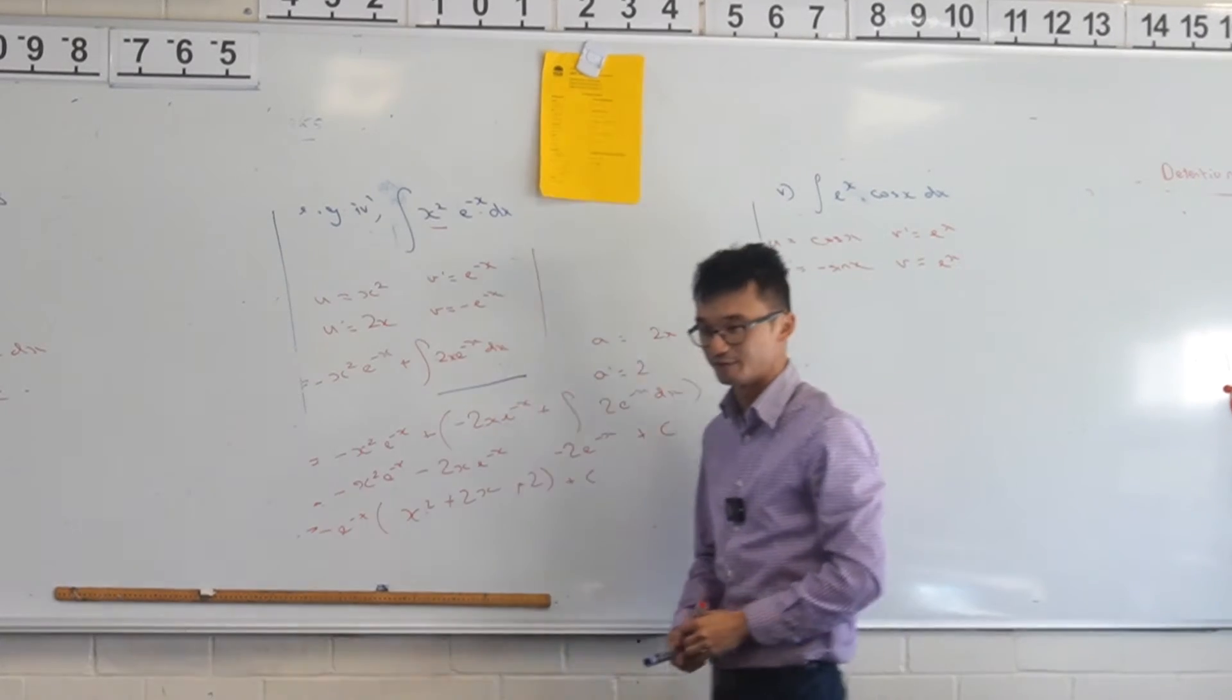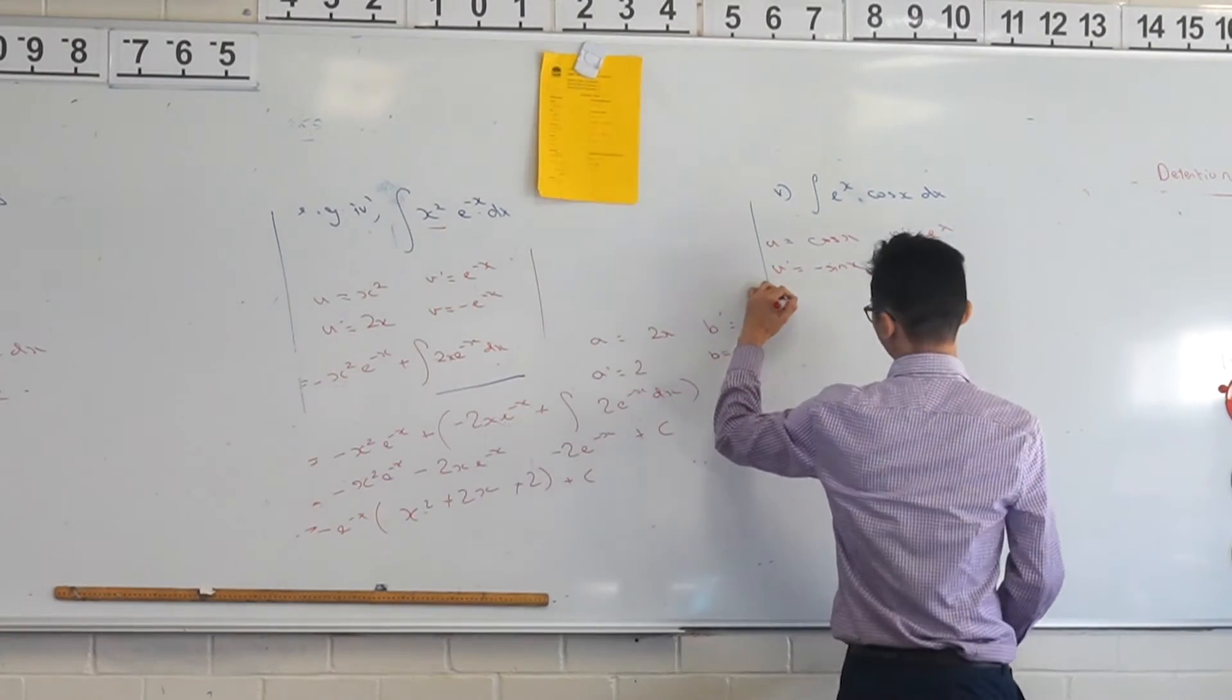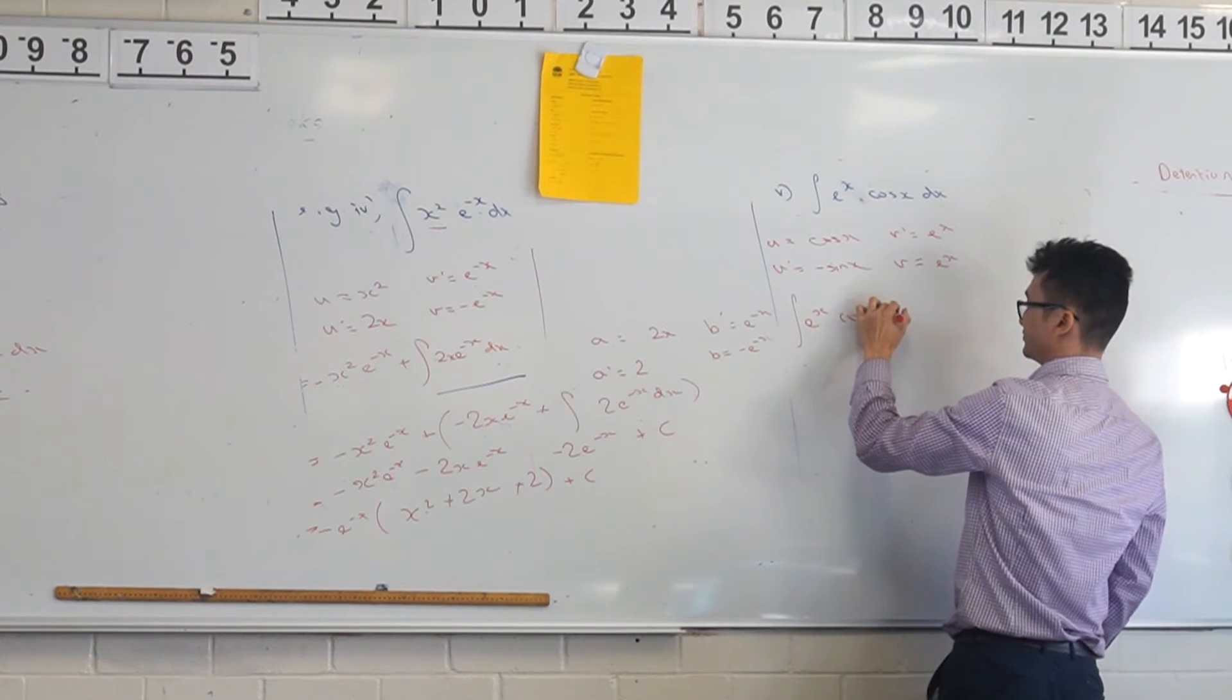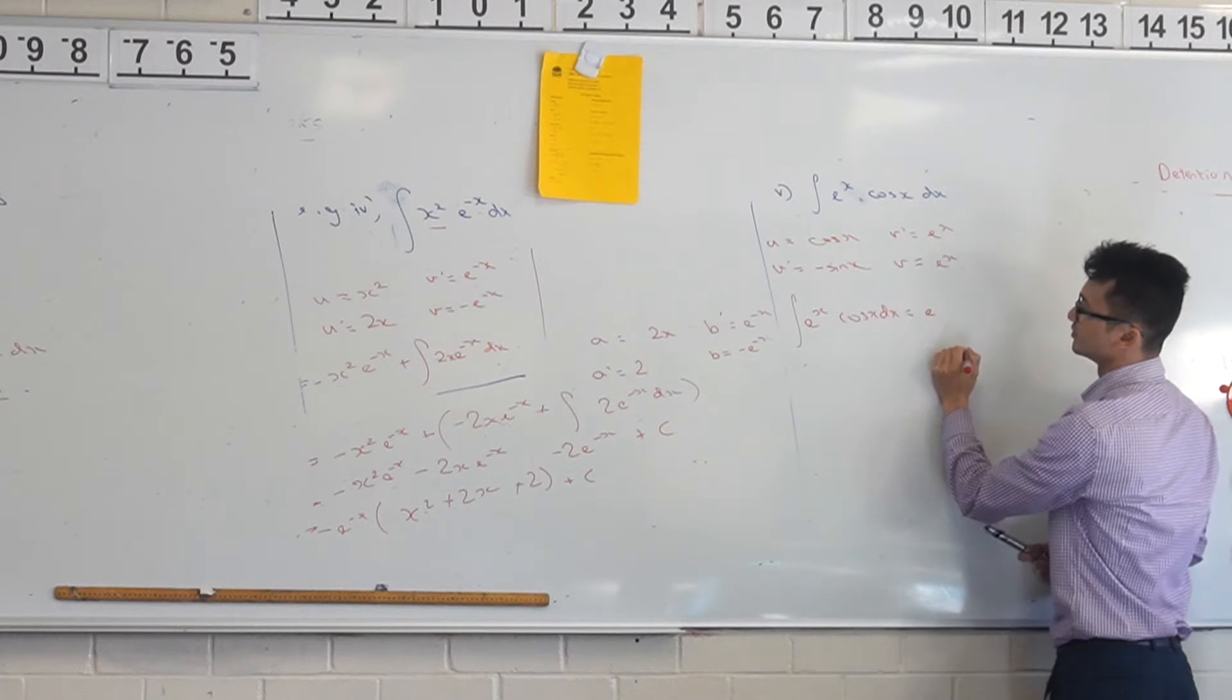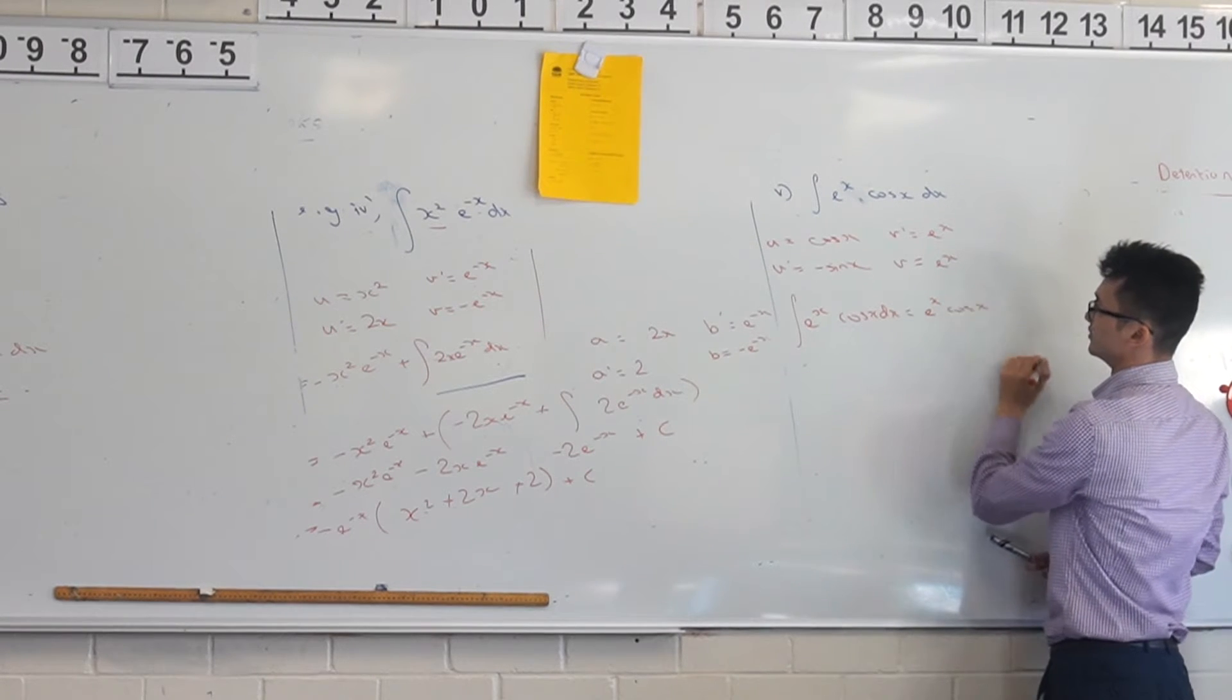At this point you may be wondering, all right, well what do we do next? Let me write this out. So what are we going to get? V times u minus the integral of v du is e to the x times cos x, take away...